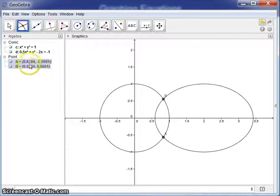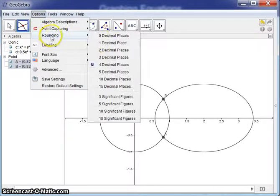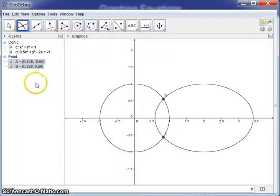And now we get the two points, A and B. I currently have GeoGebra set to four decimal places for rounding. If you want another rounding option, again, just go up to Options, Rounding. And you can set it to two, three, four, whatever. So if we did three, now we've got a three decimal digit approximation of those coordinates.